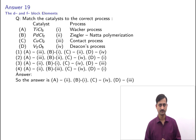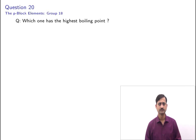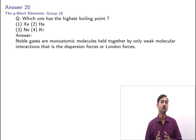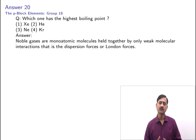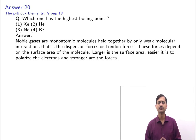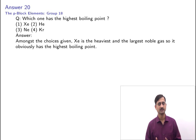The next question is from P-block elements, group 18. Which noble gas has the highest boiling point: Xenon, Helium, Neon, or Krypton? Noble gases are monoatomic, held together only by London dispersion forces, which depend on surface area. Larger surface area means easier polarization and stronger forces, raising the boiling point. Among the choices, xenon is the heaviest and largest, so it has the highest boiling point.